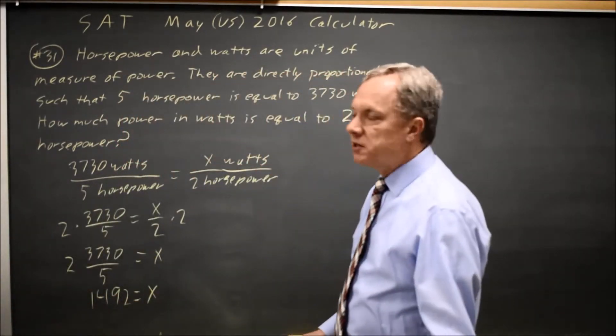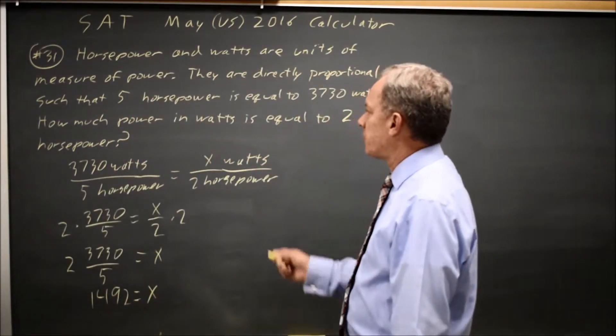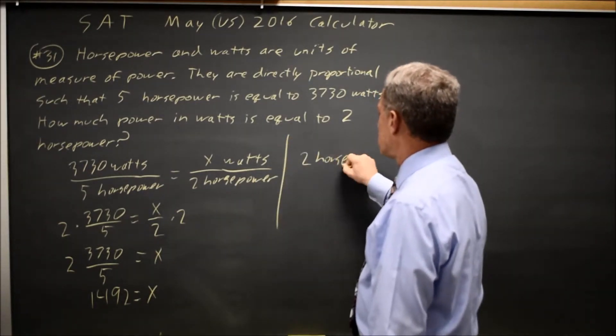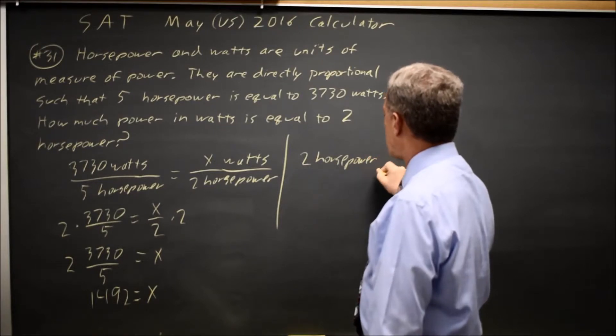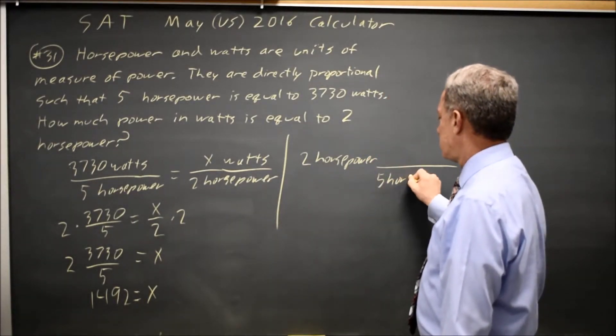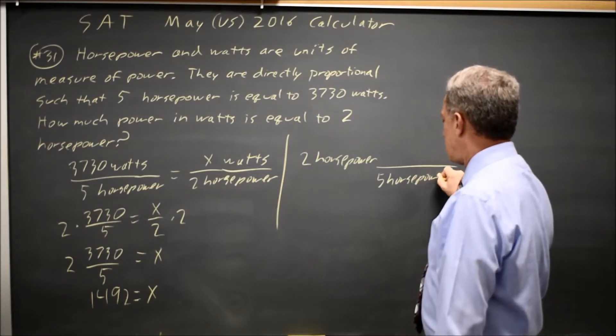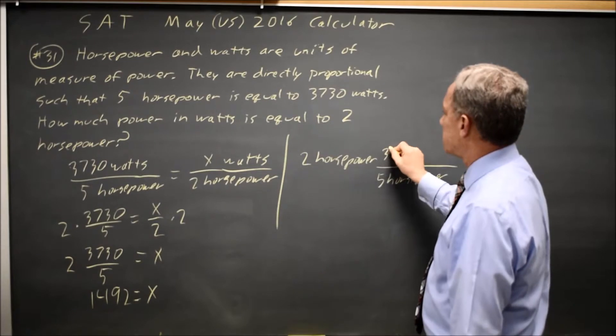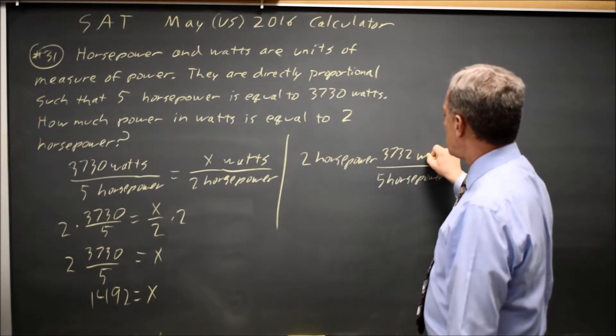Alternatively, I can look at this as a conversion of units rather than as a proportion. So I have 2 horsepower, and I want to cancel the horsepower, so I'll put 5 horsepower on the denominator, and 5 horsepower is equal to 3732 watts.